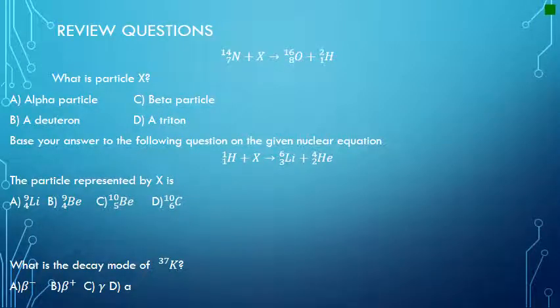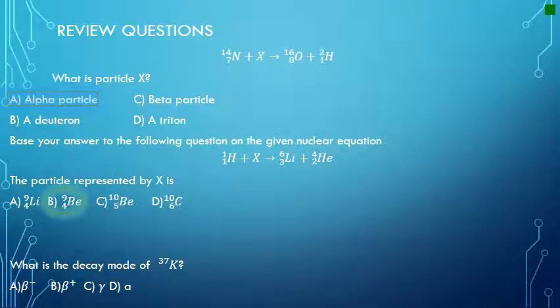Let's look at some review questions. What is particle X in this reaction? To solve these, make sure the sum of the mass and atomic numbers on the reactant side equals the sum on the product side. By doing that, you'll find the answer is A — an alpha particle, with a mass number of 4 and atomic number of 2. For the next question, using the same method, the answer is B — beryllium-9, which has an atomic number of 4. Note that choice A has a mass number of 9 and atomic number of 4, but the element is lithium, which doesn't have an atomic number of 4.